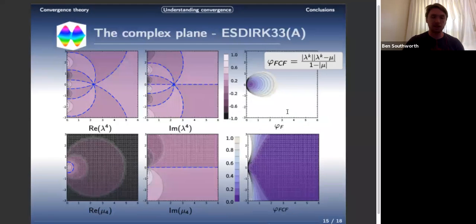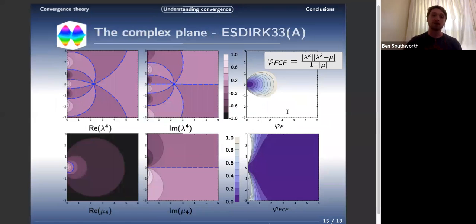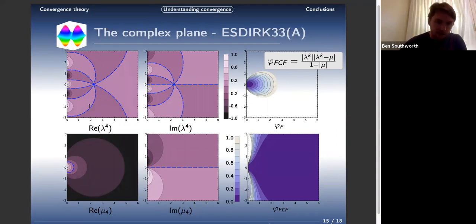That's been all using the SPD operator with real eigenvalues. We can look at a more complex setting, unintended, using the whole complex plane. These are the eigenvalues in the complex plane. Again, back to this ESDIRK 33. We have the real part, imagined part of lambda to the fourth for coarsening factor four, and the coarse grid eigenvalue. Then the convergence for F relaxation and FCF. The blue dotted lines here indicate sign changes. The key is that these sign changes really define convergence.